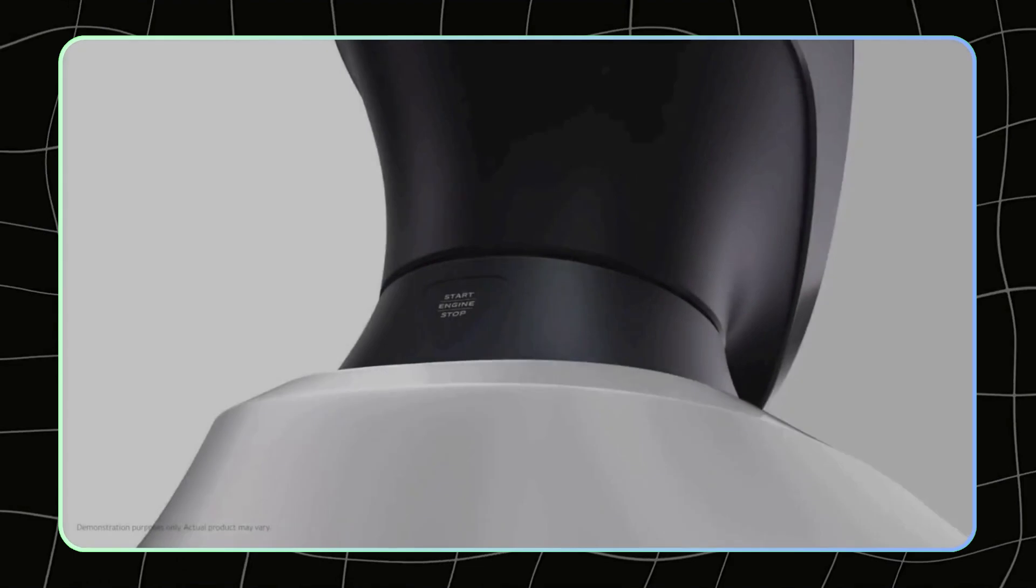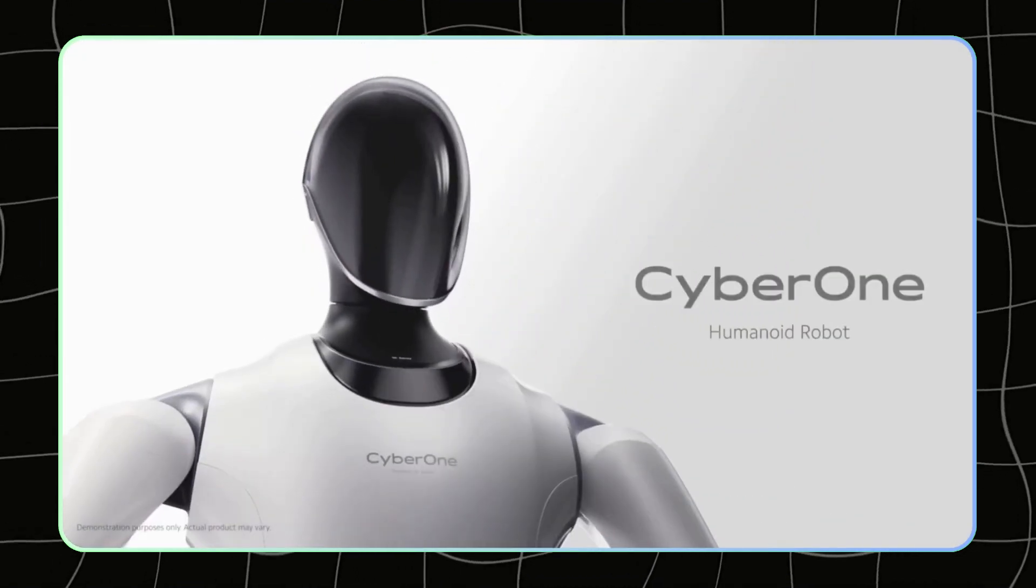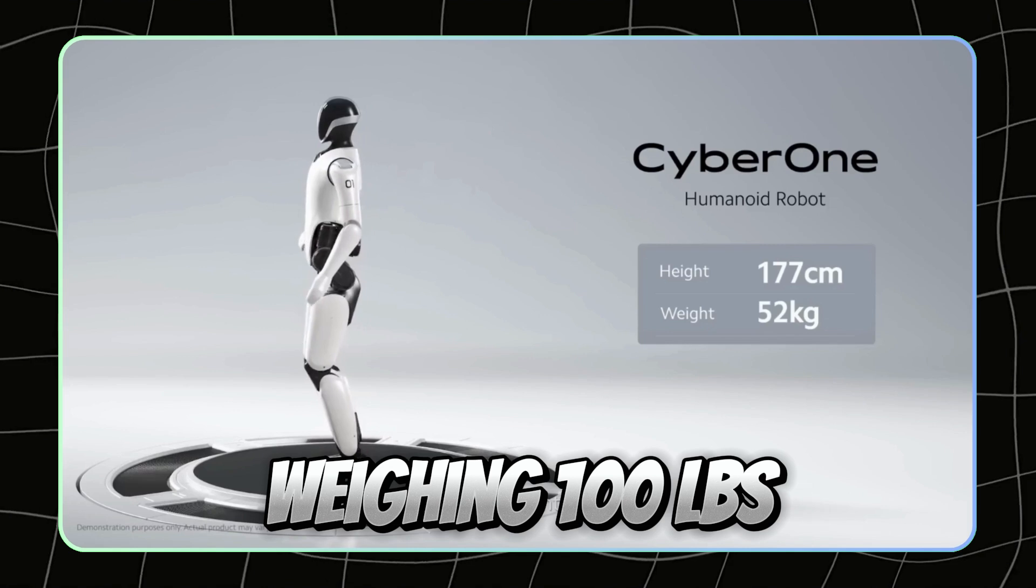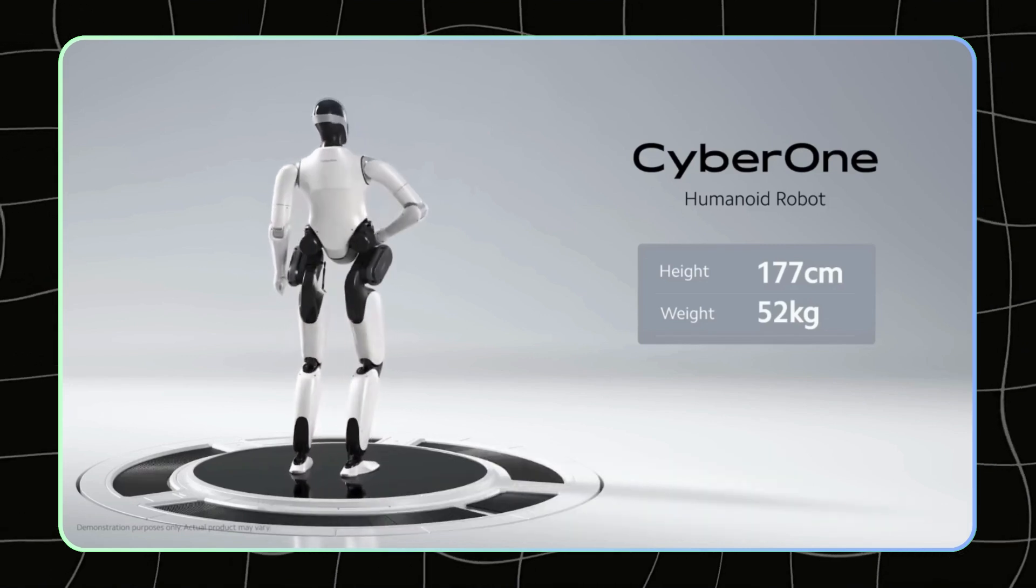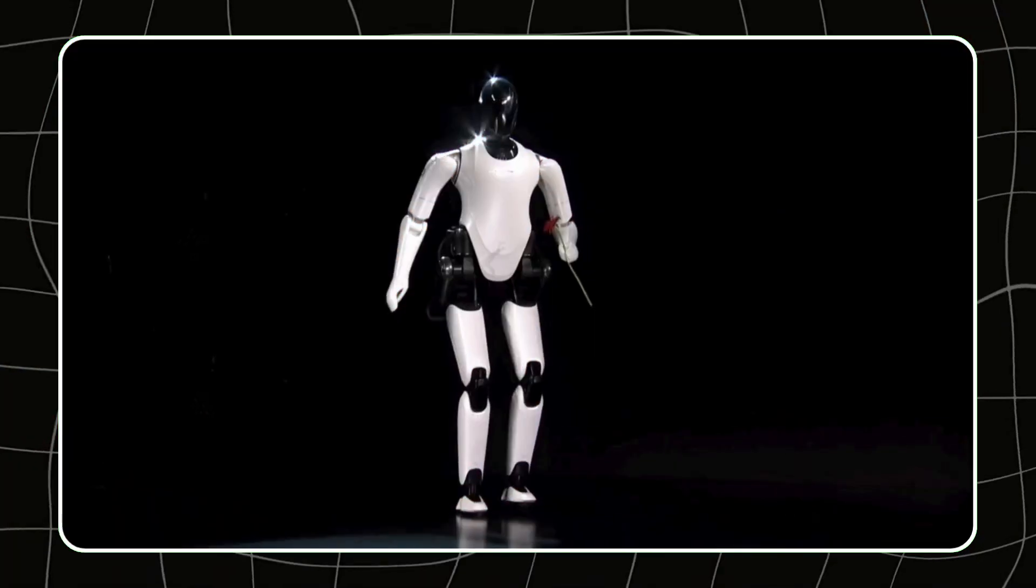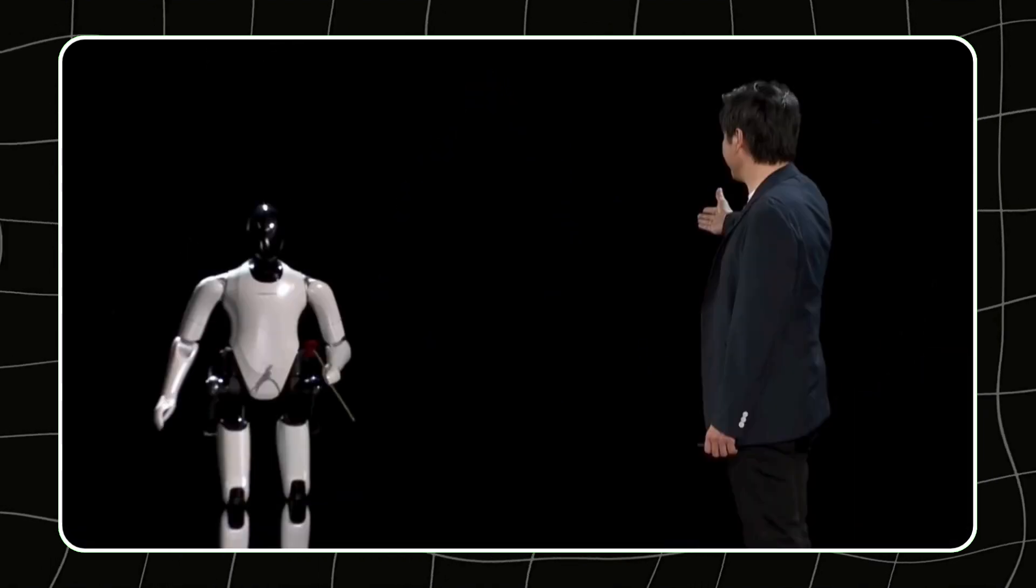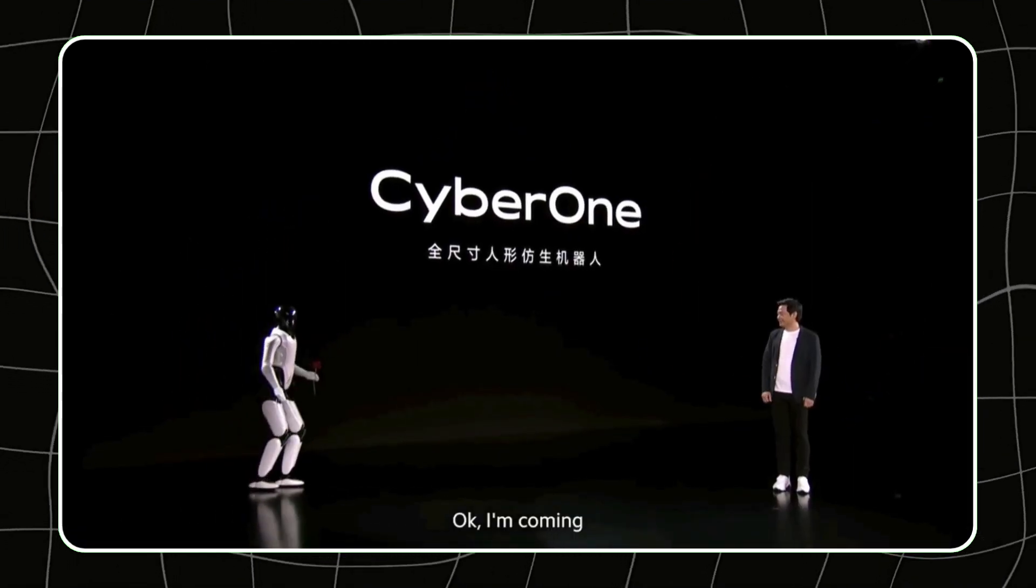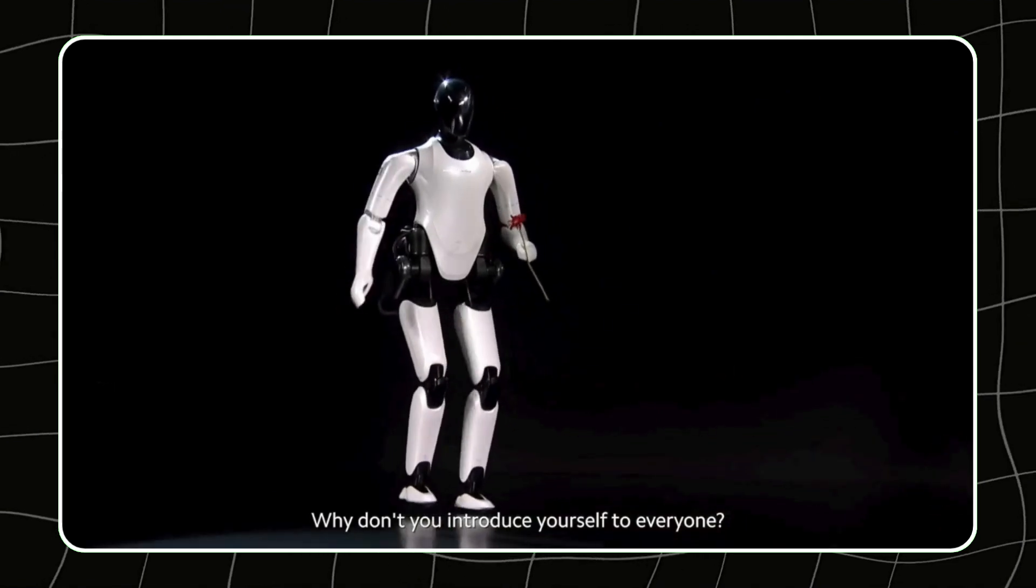Next on our list is the Xiaomi Cyber One, a humanoid robot that stands 5'8" tall and weighs 100 pounds. This robot is designed for interaction, equipped with AI capabilities that allow it to recognize human emotions and respond accordingly. Picture a robot that can not only assist you with tasks, but also understand your feelings and react in a meaningful way.